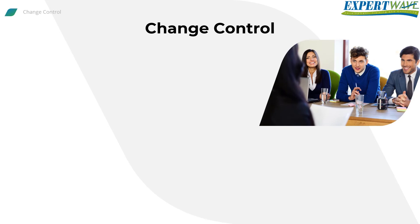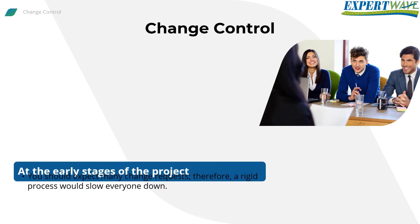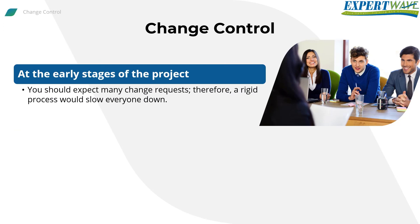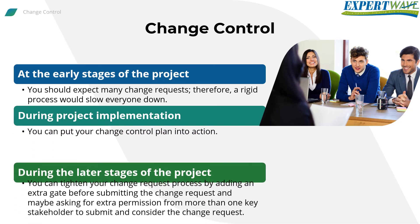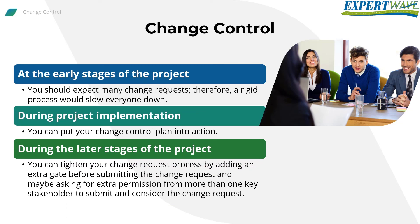The change control process doesn't need to be implemented rigidly from day one. At the early stages of the project, you should expect many change requests, so a rigid process would slow everyone down. It's recommended to simply notify stakeholders of changes during early implementation. During later stages, you can tighten the change request process by adding an extra gate before submission and requiring permission from more than one key stakeholder to submit and consider the change request.